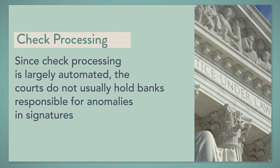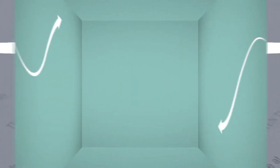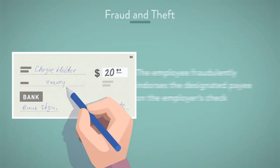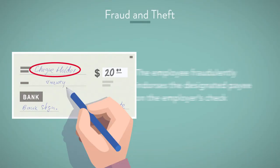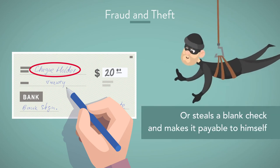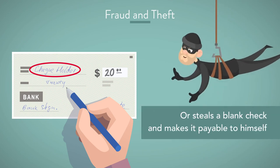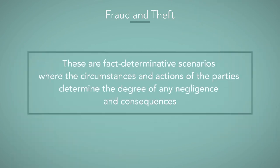Note, however, that since check processing is largely automated, the courts do not usually hold banks responsible for anomalies in signatures. Another situation where an employer may encounter an employee's dishonesty is when the employee fraudulently endorses the designated payee on the employer's check, or steals a blank check and makes it payable to himself. These are fact-determinative scenarios where the circumstances and actions of the parties determine the degree of any negligence.